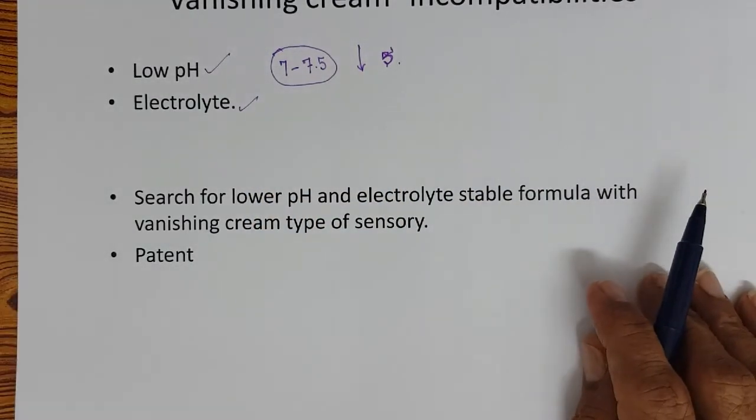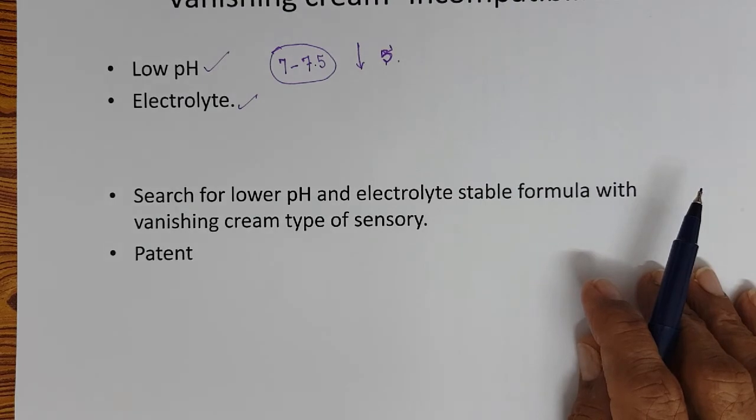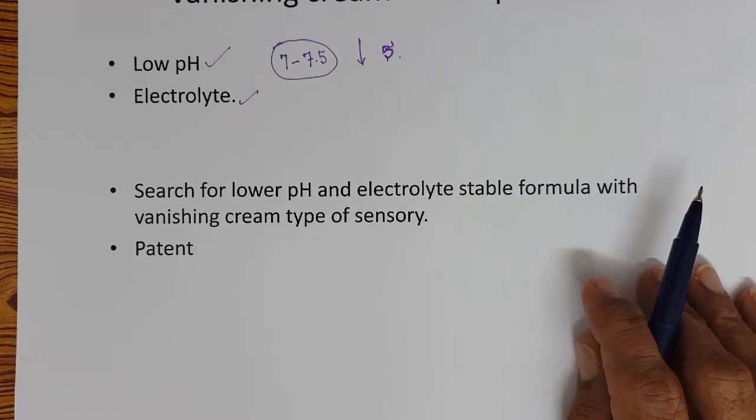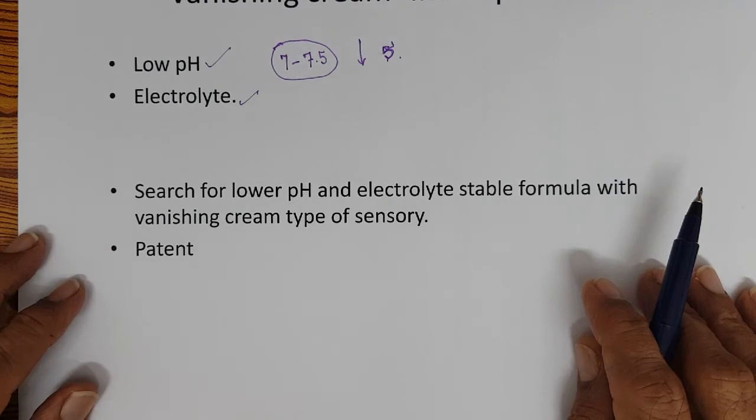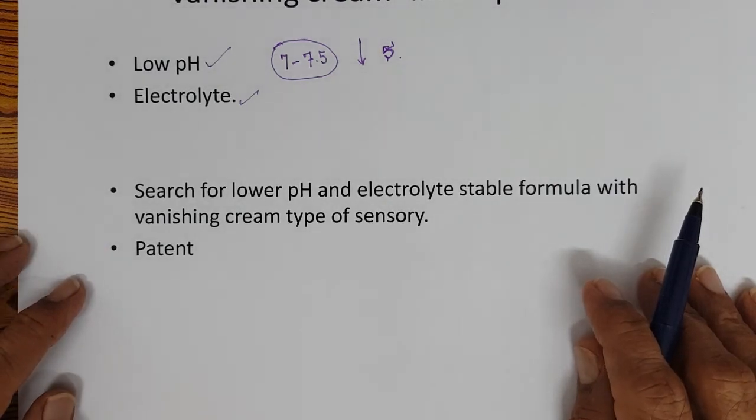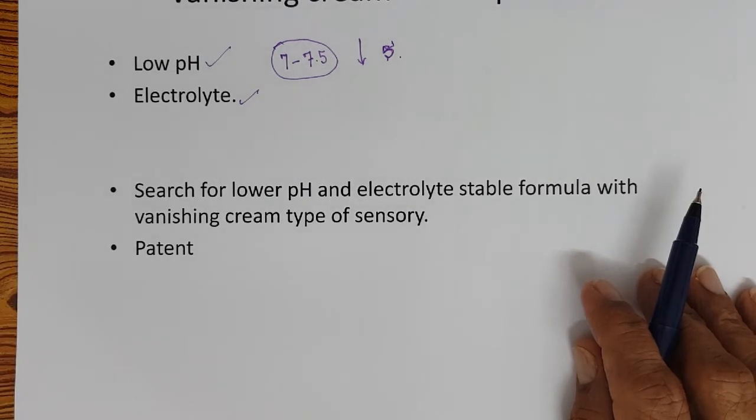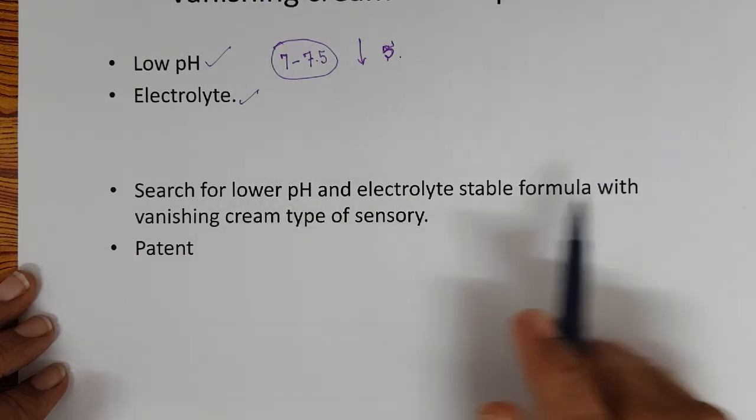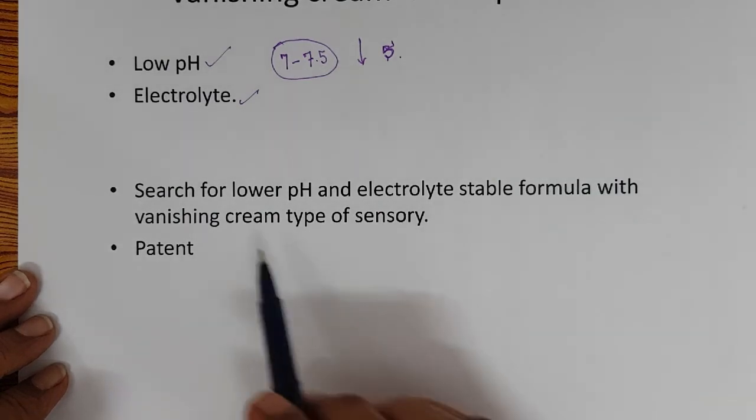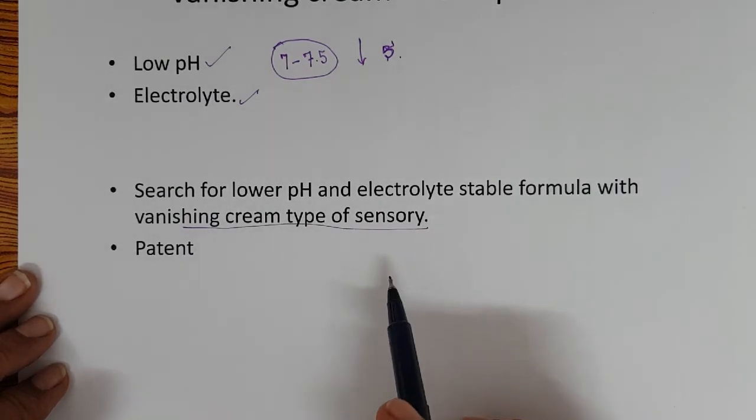And electrolytes - any electrolyte will salt out the soap. When it salts out the soap, of course soap will not be there at the interface, so it will cause emulsion instability and can crack the cream. Vanishing cream is an excellent base for actives but it has limitations. Very few actives can be used in a vanishing cream base environment. There was a search for creams with low pH, compatible with electrolytes and other actives, but still have a vanishing cream type of sensory.